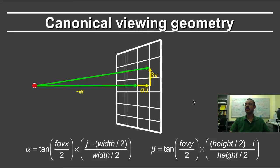And indeed, that's what I've shown in this slide, that the alpha coordinate is the tangent of field of view in the x direction divided by 2 times j minus width by 2, normalized by width by 2. Beta for the y direction is exactly the same. It's tan field of view y divided by 2 times, and now there's just a sign change. So you say height divided by 2 minus i, instead of i minus height by 2. And there's a very simple reason for that.